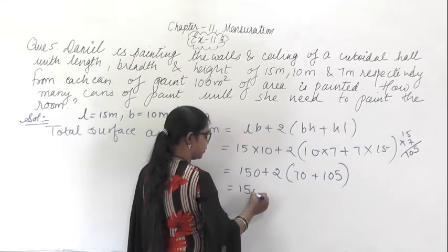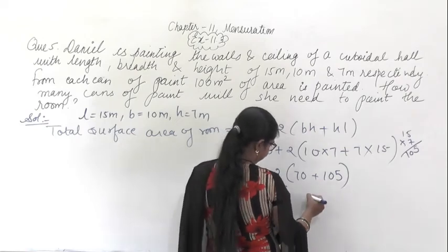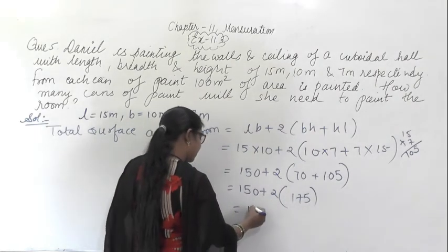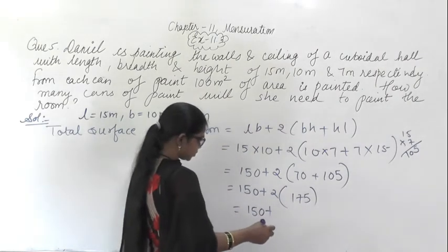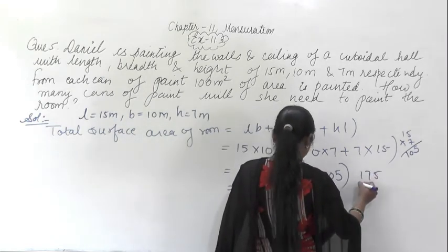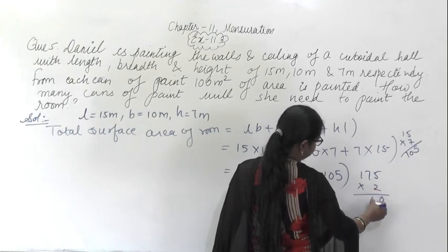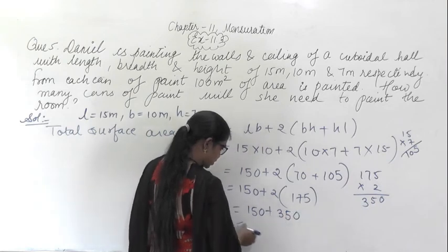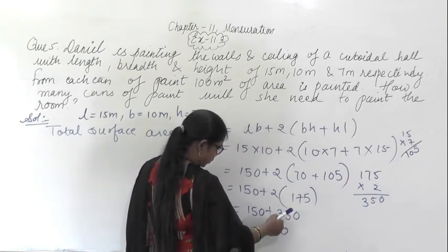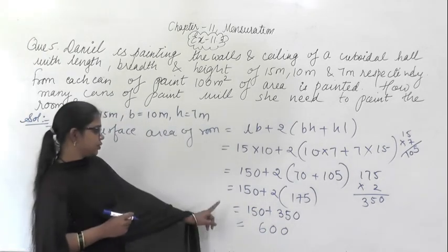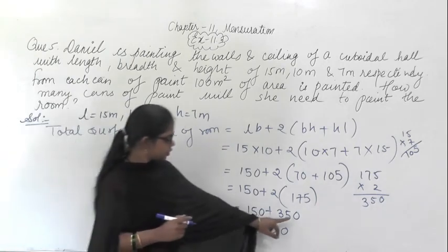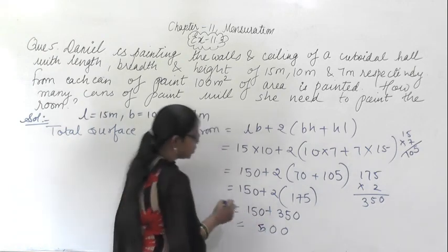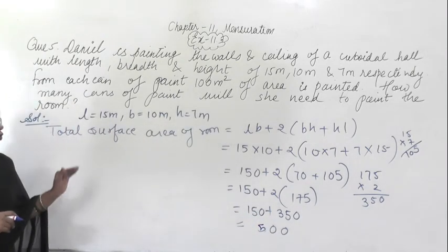From here you will get 2 into 325, which equals 650 square meters. The total surface area of the room comes out to 500 square meters — wait, from here you are getting the total surface area of the room as 500 meter square, and dividing by 100 meters square per can gives the number of cans needed.